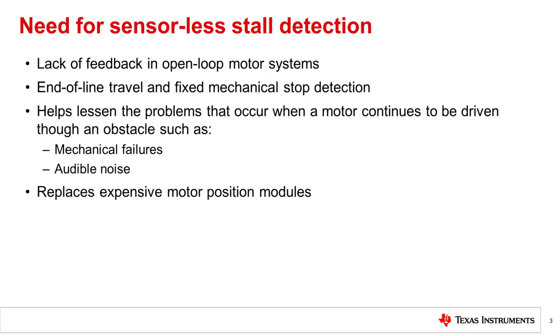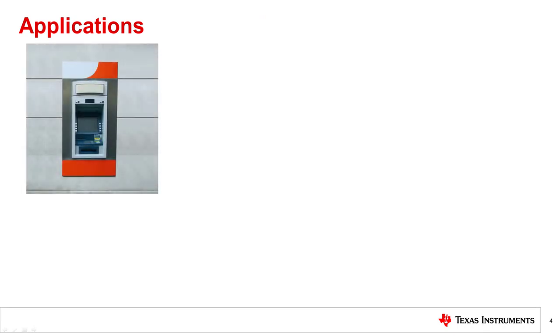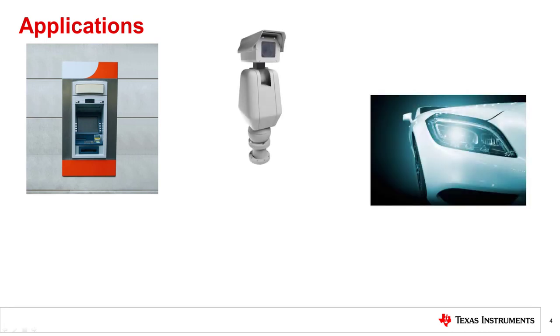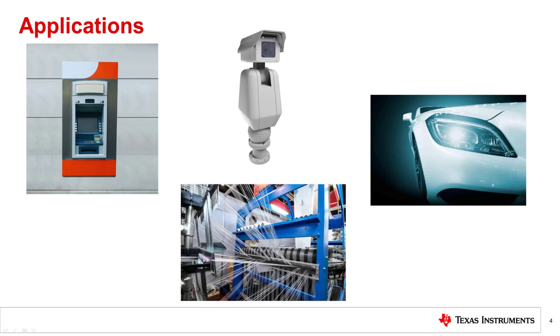Furthermore, stall detection can reduce potential mechanical failures and audible noise that can occur if the motor continues to be driven through an obstacle. Sensorless stall detection can replace expensive motor position modules like Hall sensors and encoders. Examples of applications that can benefit from stall detection include ATMs, surveillance cameras, automatic headlight leveling and swivel systems, and industrial textile machines.